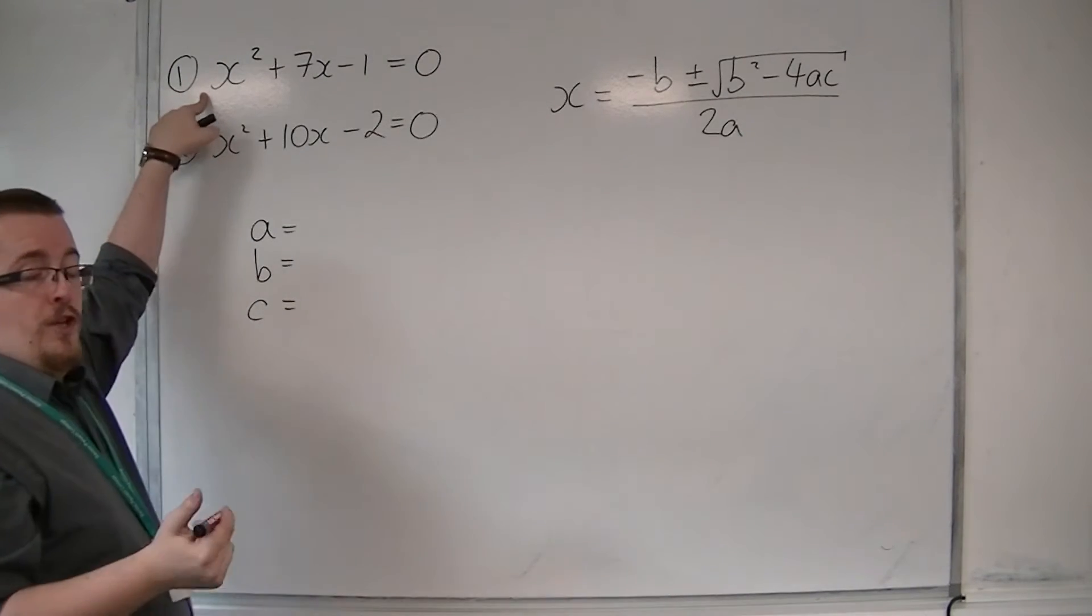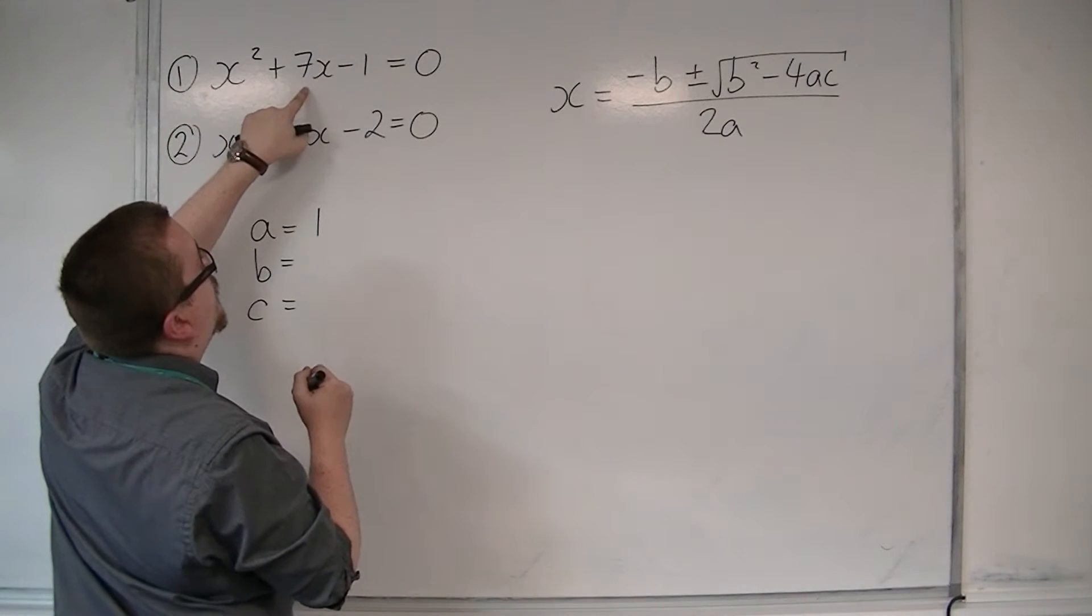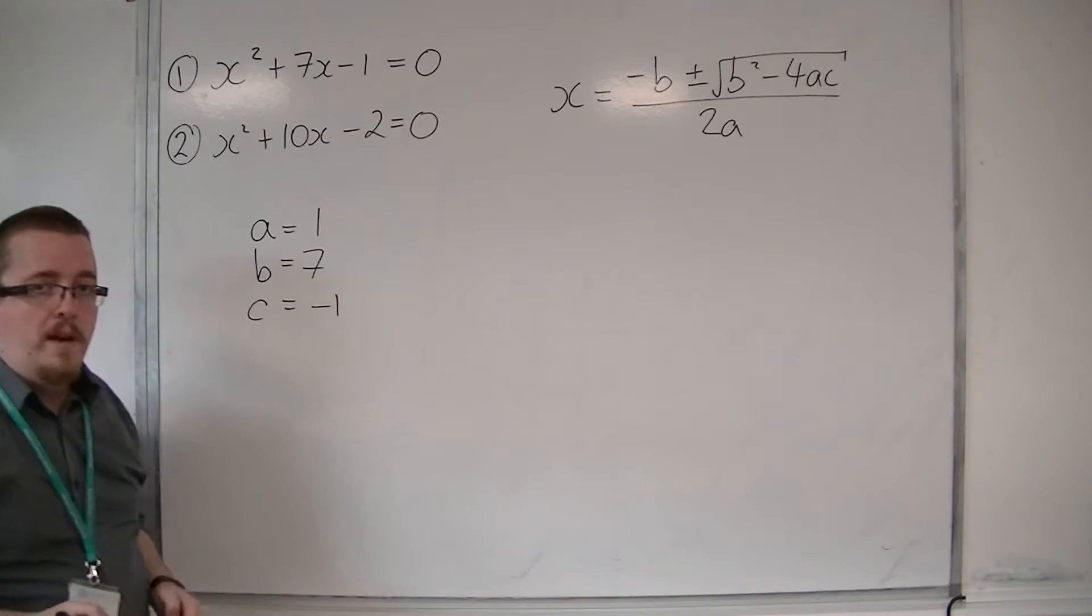A is the coefficient of x squared, so the number in front of the x squared, which is 1. B is the coefficient of x, so 7. And c is whatever you have left over, which is the minus 1.